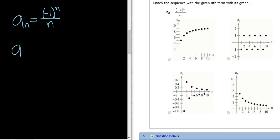So a sub 1, that's going to be negative 1 to the first power over 1. So negative 1 over 1 is negative 1. Let's do another one.